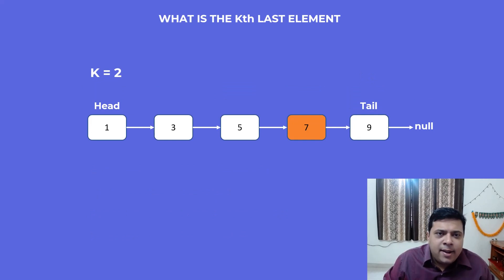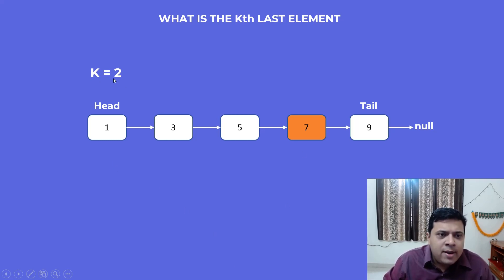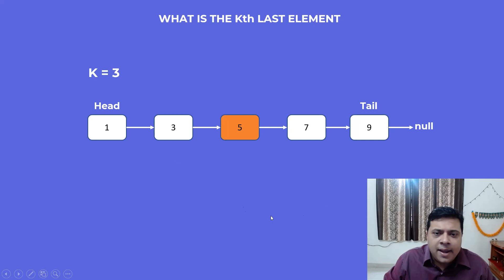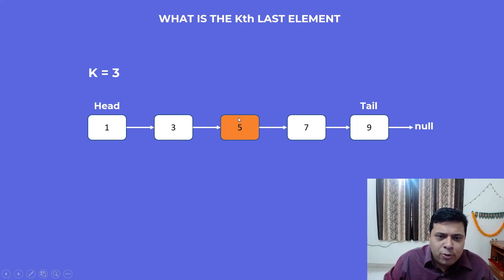Let's understand what the kth last element is. Our linked list has elements 1, 3, 5, 7, and 9 — 1 is the head and 9 is the tail. Our job is to find the kth last element. When k equals 2, the question becomes: what is the second last element? That would be 7, since 9 is the last. Taking another example where k equals 3, the last element is 9, the second last is 7, and the third last is 5 — so our job is to find node 5.